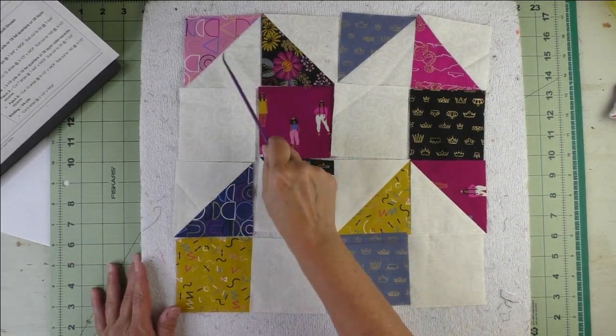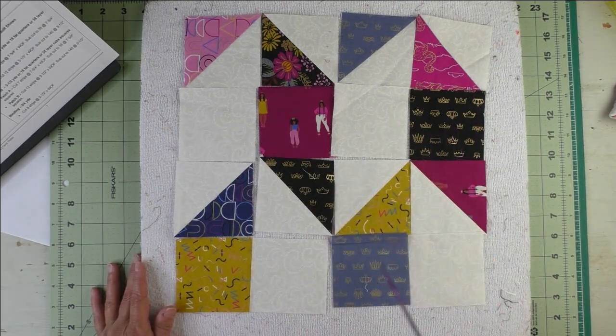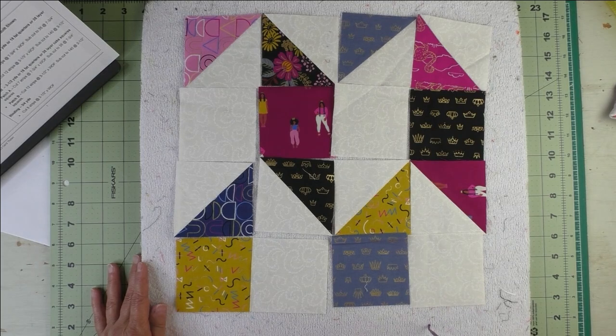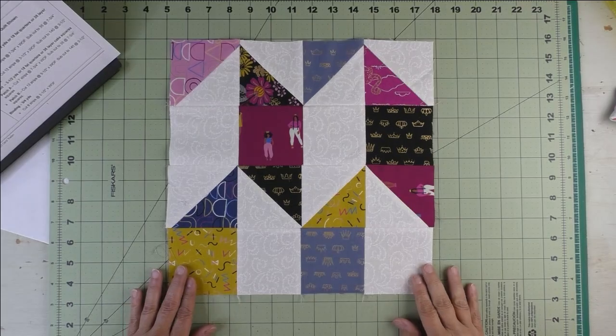Now we start at the top and sew these units into row one, row two, row three and row four. Press all of your seams open, then sew all the rows together and your block will be finished.